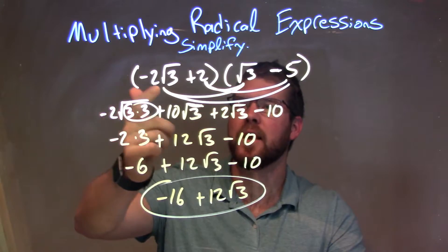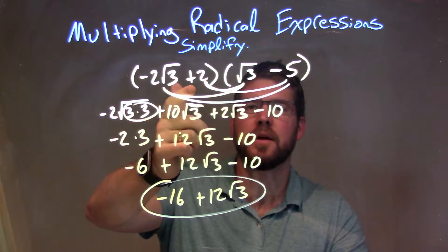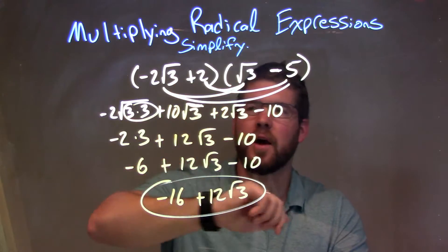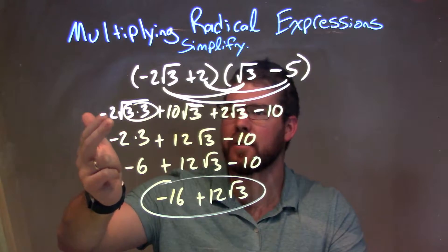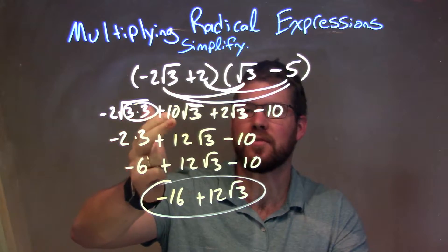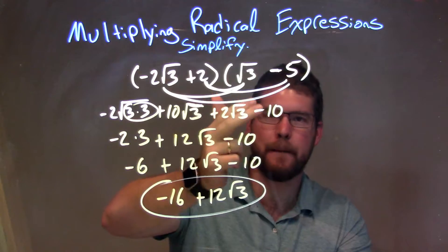So let's recap. We're given negative 2 square root of 3 plus 2 times square root of 3 minus 5. All parts of my first parentheses multiply by all parts of my second parentheses to give us minus 2 square root of 3 times 3 plus 10 square root of 3 plus 2 square root of 3 minus 10.